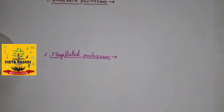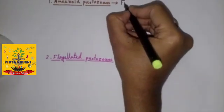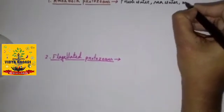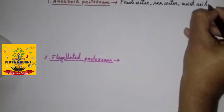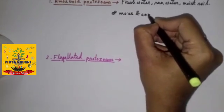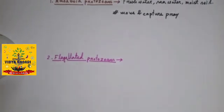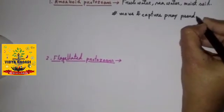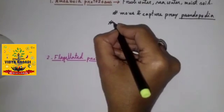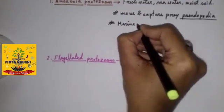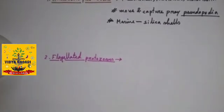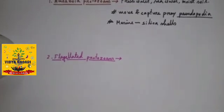Now amoeboid protozoans. They live in fresh water, sea water, and in moist soil. They move and capture their prey by putting out pseudopodia or false feet as in Amoeba. Marine forms have silica shells on their surface. Some of them such as Entamoeba are parasites.